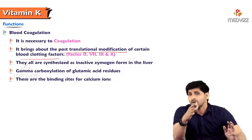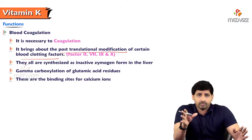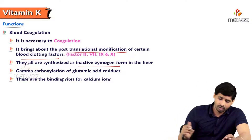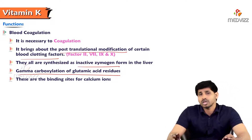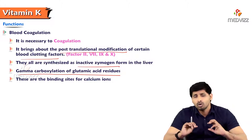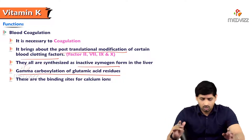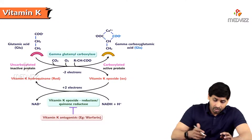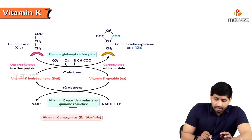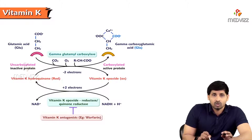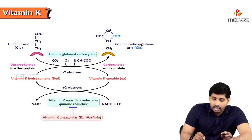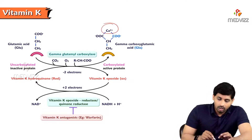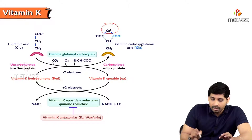To make the inactive clotting factors active, you require vitamin K. Without vitamin K they cannot be active, so there is no proper coagulation. They are all synthesized as inactive zymogens - a zymogen is an inactive enzyme. Vitamin K promotes gamma-carboxylation of glutamic acid residues; wherever glutamic acid is present, it promotes calcium to go there and form a mesh-like structure. The binding site is a calcium ion, and the enzyme is gamma-glutamyl carboxylase.